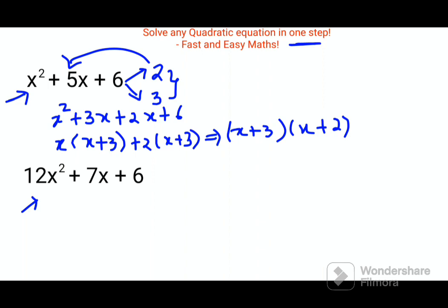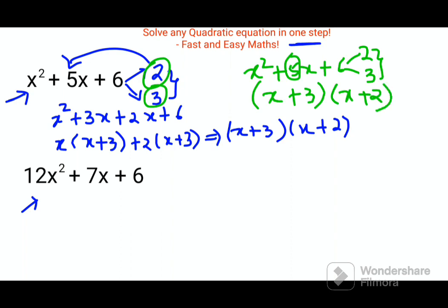Now the trick which I'm trying to show you is you just have to focus on these two numbers. Here we had x² + 5x + 6. Now we knew that 2 into 3 are the two factors whose addition will get you 5, so here you could have directly written x + 3 and x + 2.